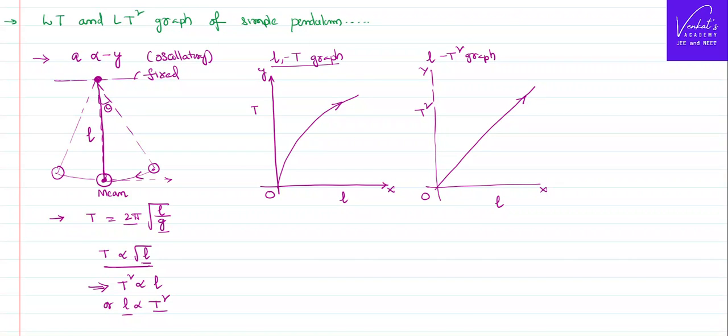Now I want to go further and draw a combined graph of these two. What I mean by combined graph is length on x-axis versus T as well as T² both on y-axis. How does that graph look like?